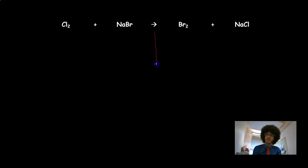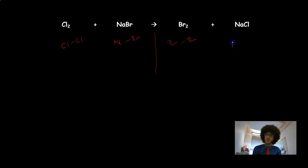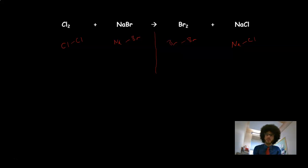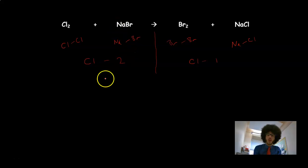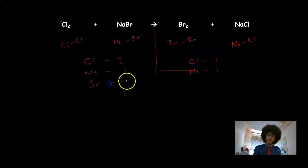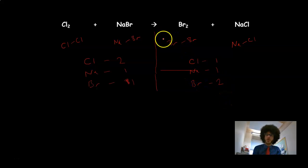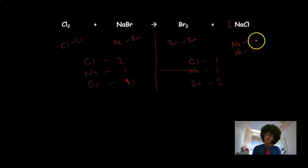Next, chlorine reacting with sodium bromide in a displacement reaction to form bromine and sodium chloride. Drawing it out: Cl₂, NaBr, Br₂, and NaCl. Counting atoms: on the left, Cl = 2, Na = 1, Br = 1. On the right, Cl = 1, Na = 1, Br = 2. The chlorine imbalance is already a big flag — 2 on the left and only 1 on the right.